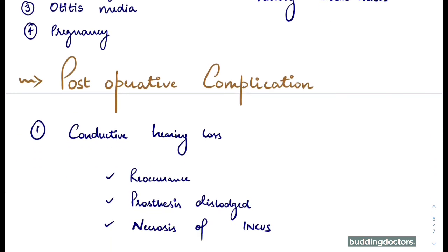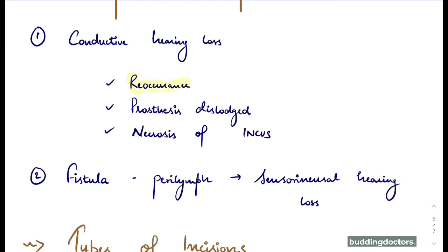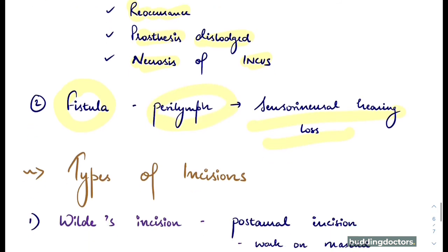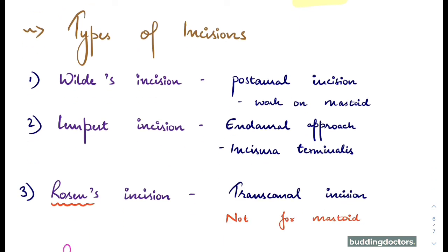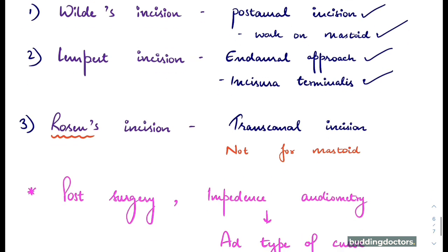Post-operative complications include recurrence of conductive hearing loss, prosthesis dislodgement, necrosis of the incus, fistula formation, perilymph leak, and sensorineural hearing loss. Regarding types of incisions: Wilde's incision is a post-aural incision used for mastoid surgery. Lempert's incision is an endaural approach through the incisura terminalis. Rosen's incision is a trans-canal incision, not for mastoid, used to access the external auditory canal.